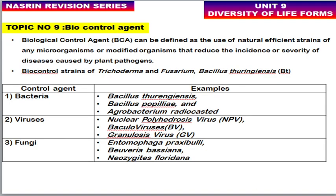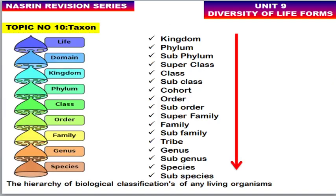Biocontrol agents are natural or modified microorganisms that reduce the incidence of disease caused by plant pathogens. Commonly used biocontrol strains include Trichoderma, Fusarium, and Bacillus thuringiensis. For bacteria: Bacillus genus and Agrobacterium are used. For viruses: nuclear polyhedrosis viruses, baculoviruses, and granulosis viruses are employed. For fungi: Entomophaga, Beauveria, and Neozygites are used, along with the widely used Trichoderma.